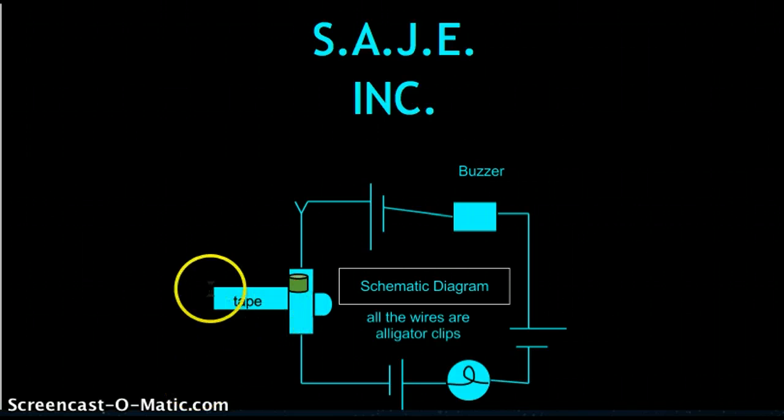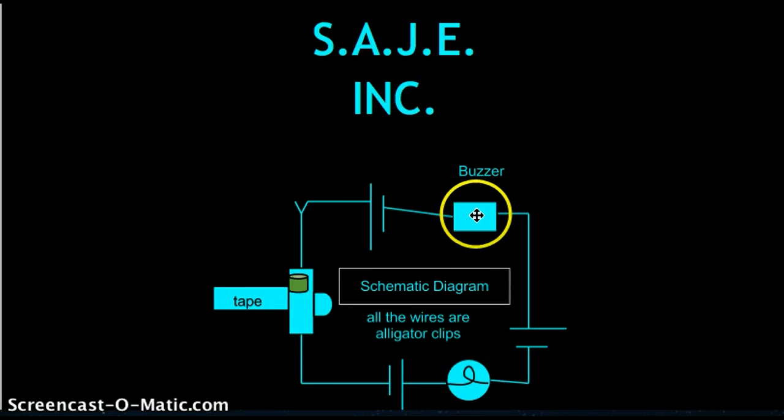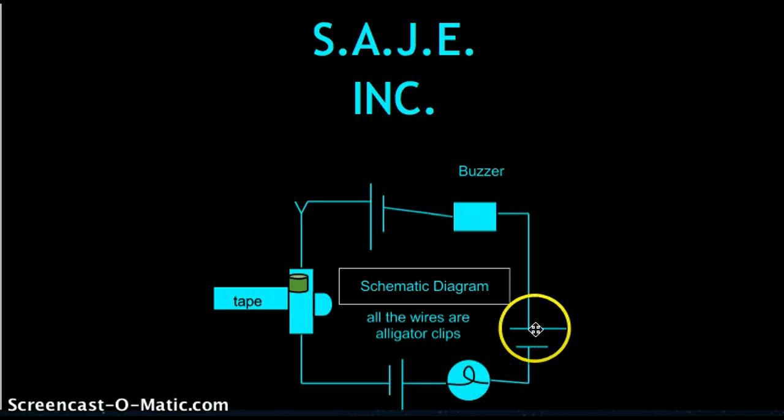So, what we have here is a trough, a light bulb, a buzzer, three d-cells, and the wires they're called alligator clips. Who knew?